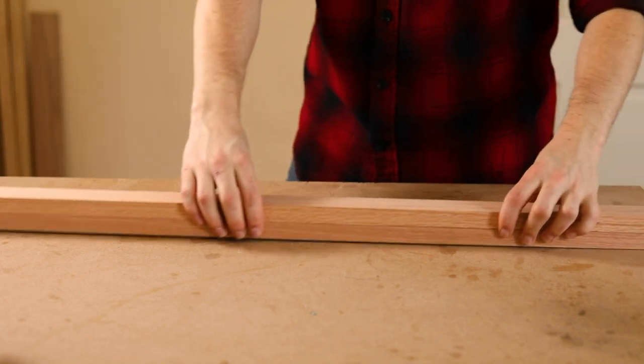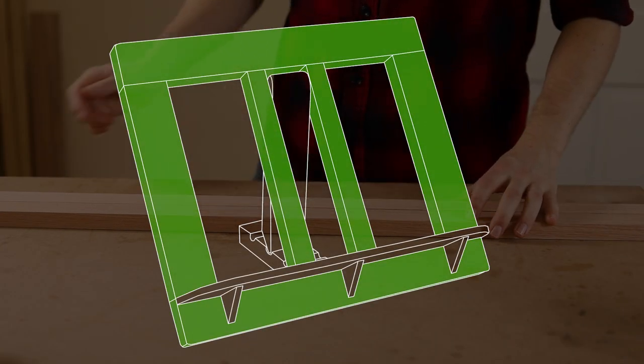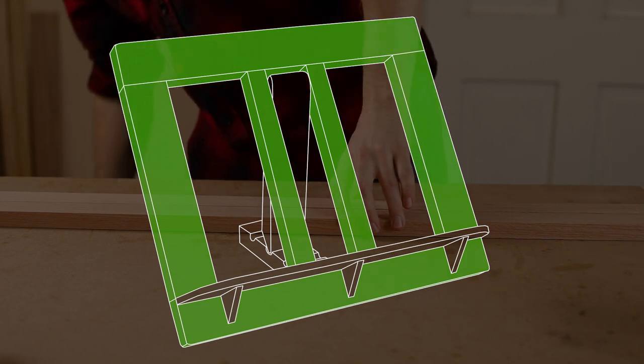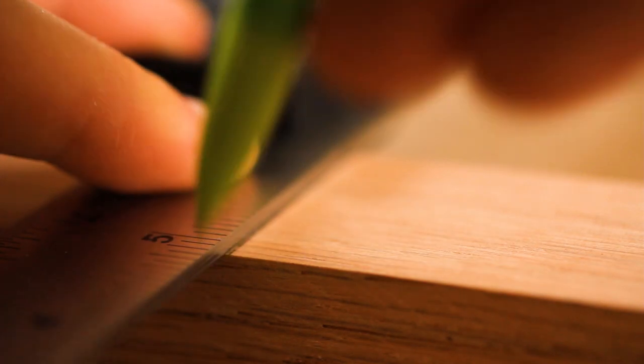To get the stand started, I'll saw this red oak 1x2 into 5 pieces to make a frame. The horizontal pieces don't need to be too exact, since any overhanging material can be removed later, but the three vertical pieces do need to be pretty precise.